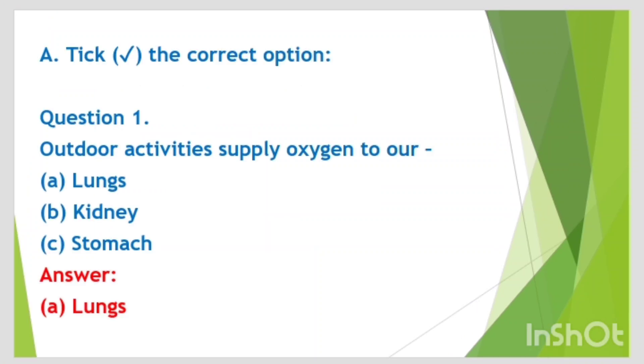Let's begin with tick the correct option. First one: outdoor activities supply oxygen to our — options are lungs, kidney, stomach. Answer is lungs.